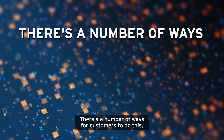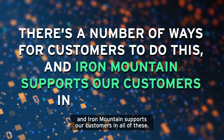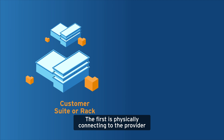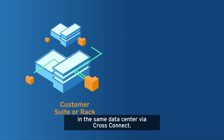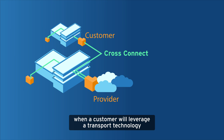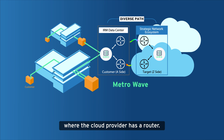There are a number of ways for customers to do this, and Iron Mountain supports our customers in all of these. The first is physically connecting to the provider in the same data center via cross-connect. The second — and this is probably more common at Iron Mountain — is when a customer will leverage a transport technology like a metro wave to reach a strategic interconnection point where the cloud provider has a router.